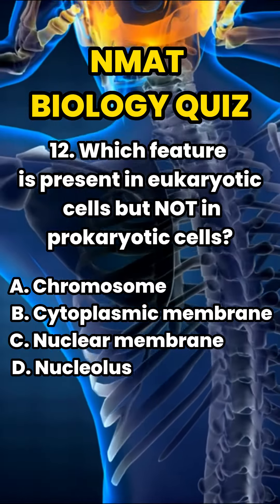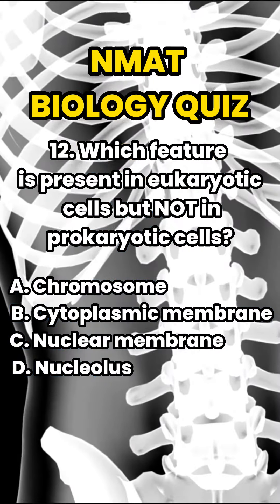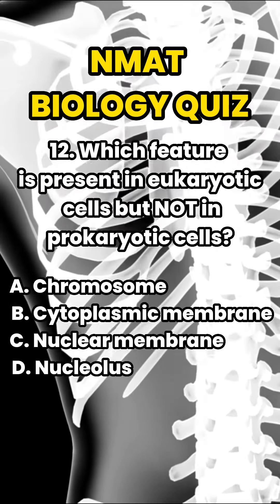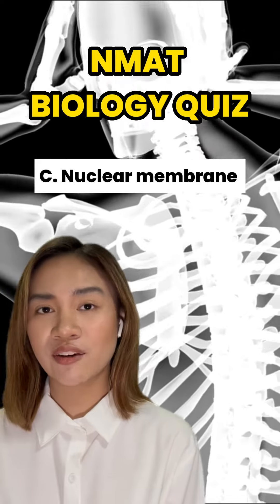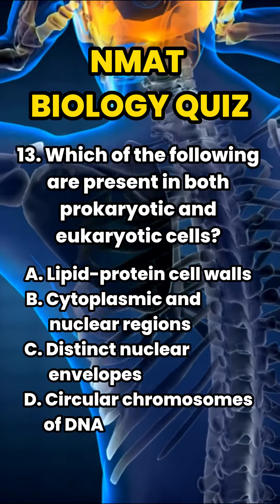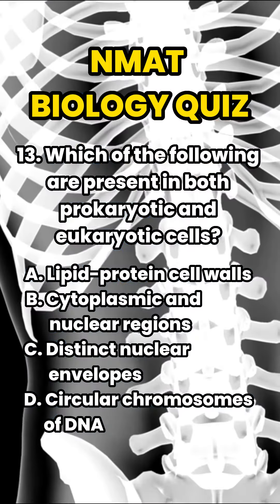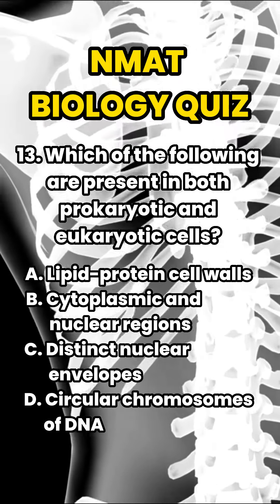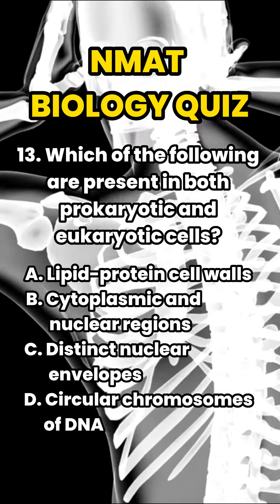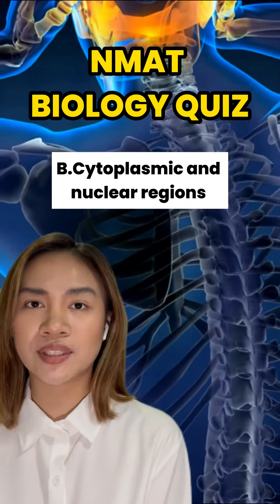Number 12. Which feature is found in eukaryotic cells and not found in prokaryotic cells? The main difference between prokaryotic and eukaryotic cells is the presence of the membrane-bound nucleus. Cytoplasmic and nuclear regions are found in both prokaryotic and eukaryotic cells.